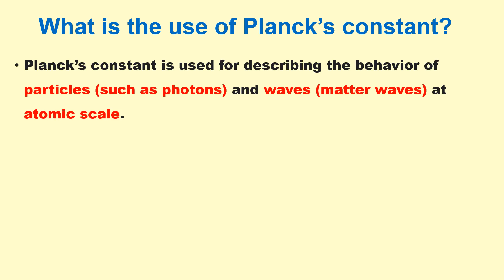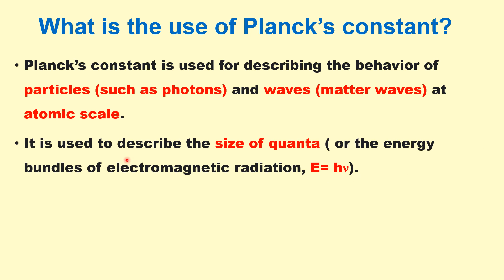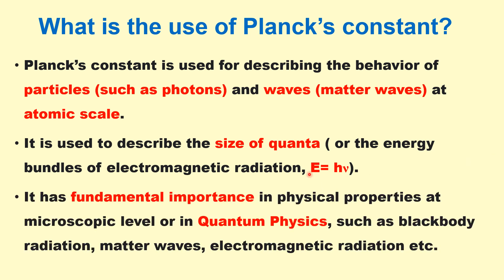What is the use of Planck's constant? Planck's constant is used for describing the behavior of particles such as photons and waves as matter waves at atomic scale. It is used to describe the size of quanta or the energy bundle of electromagnetic radiation, E equals H nu. It has fundamental importance in physical properties at microscopic level or in quantum physics such as black body radiation, matter waves, and electromagnetic radiation.